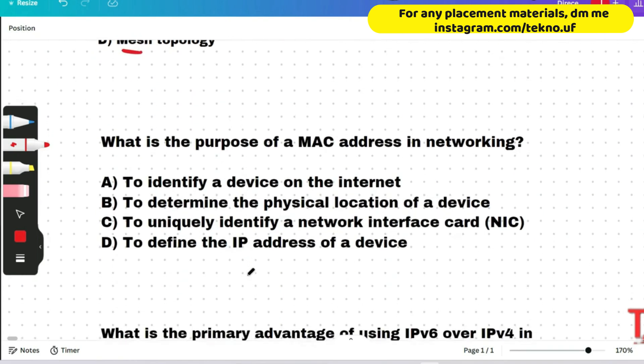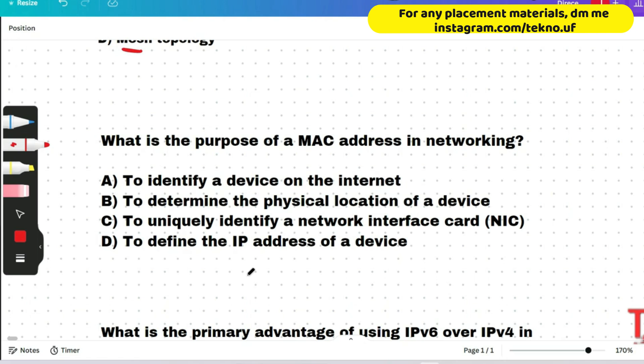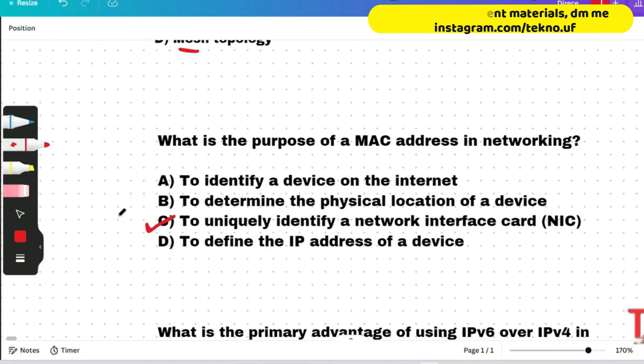Question: what is the purpose of a MAC address in networking? Options: to identify a device on the internet; to determine the physical location of a device; to uniquely identify a network interface card (NIC); or to define the IP address of a device. Option C is correct — a MAC (Media Access Control) address is a unique identifier assigned to a NIC to distinguish it from other devices on the network.